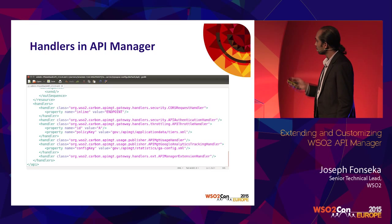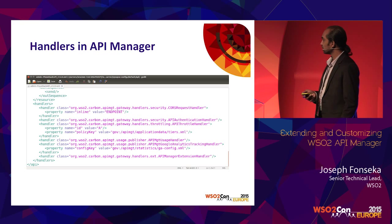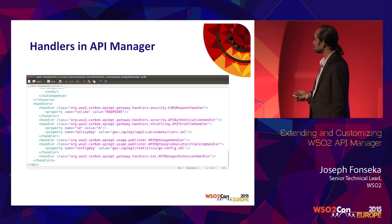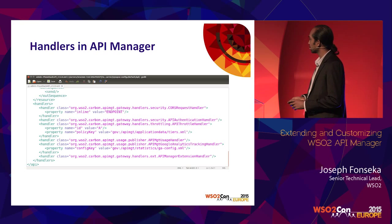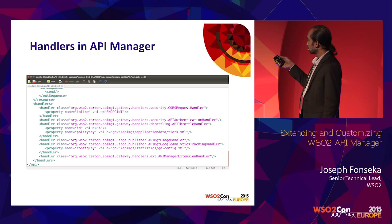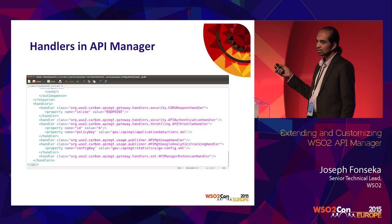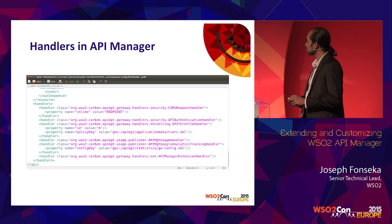If you have published an API and look at the synapse file in the Gateway, at the bottom you'll see these handlers. These are the default handlers that come with API Manager — you have the authentication handler, the API throttle handler, and other default handlers. One thing to remember: the API authentication handler is the first handler to get hit. So if you want to do some mediation before authentication, you have to place your handler before the authentication handler.